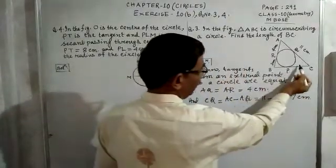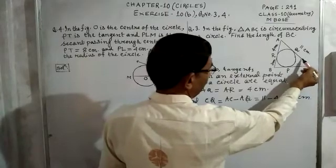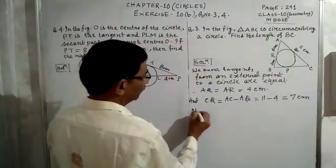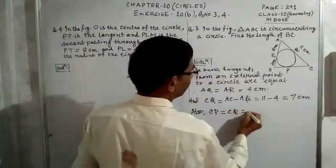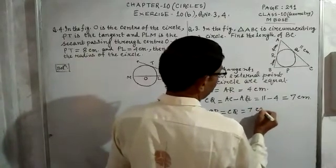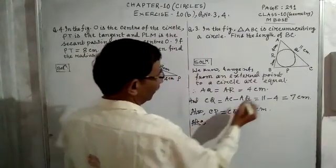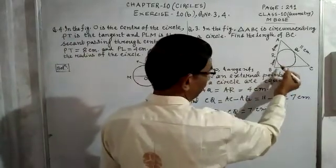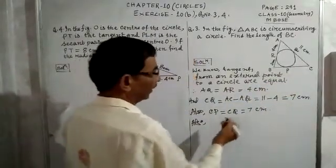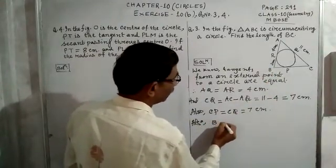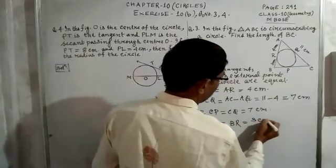CQ is a tangent and CP is another tangent from point C, so these two tangents are equal. Therefore CP is equal to CQ, which is 7 cm. Also, BP is a tangent and BR is another tangent from point B, so BP equals BR, which is given as 3 cm.